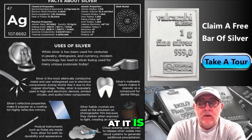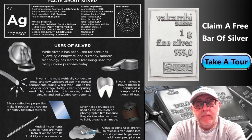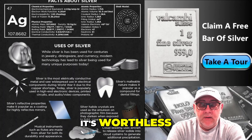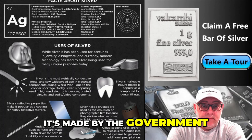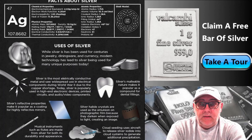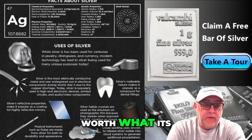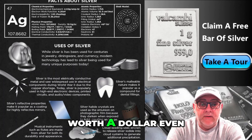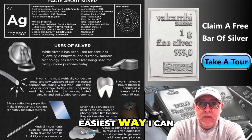Another way to look at it: if you have a silver round, which is not a government-minted coin, and the value of silver goes down to zero, it's worthless. But if you have a silver coin made by the government, the coin will still be worth its face value — so if it's a dollar coin, it will be worth a dollar, even if silver is worth zero.